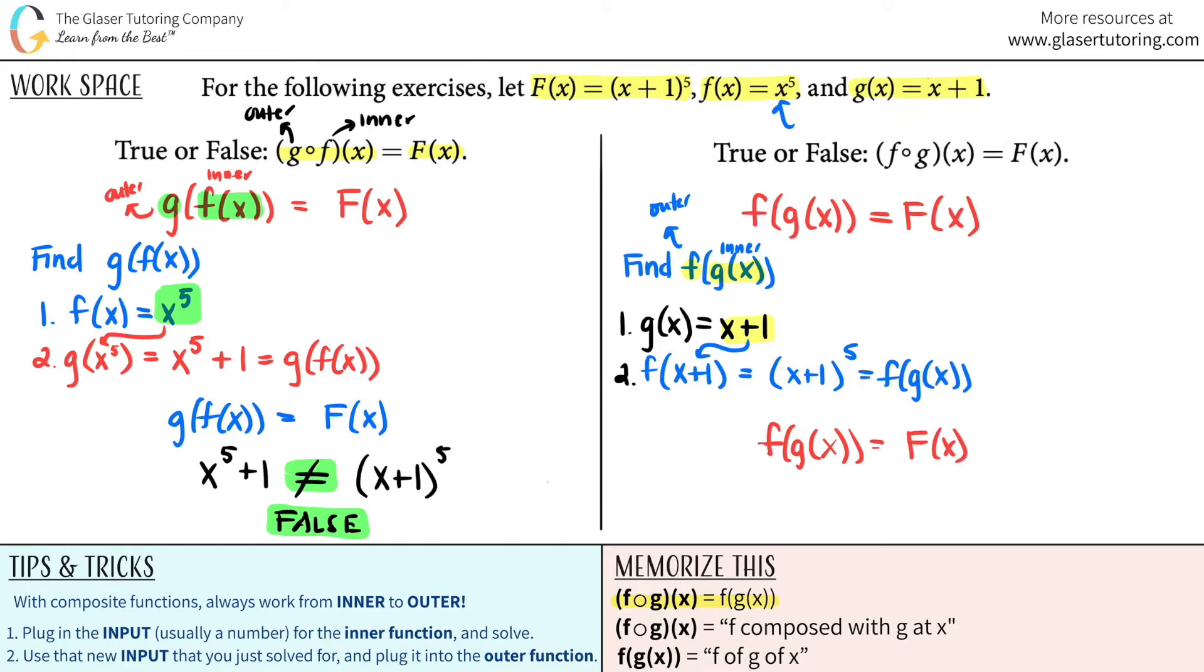Well, the answer that we just got was over here, right? X plus one raised to the fifth. So is X plus one raised to the fifth equal? What was the capital F function? Oh, it was X plus one raised to the fifth. Does this equal or does this not equal? They look exactly the same, right? So they equal each other. This is true.